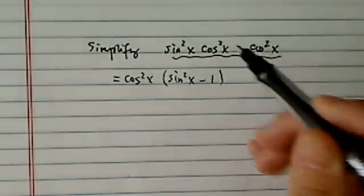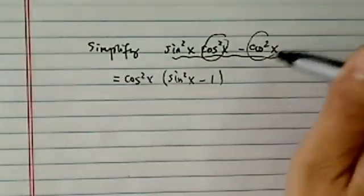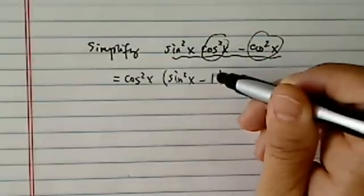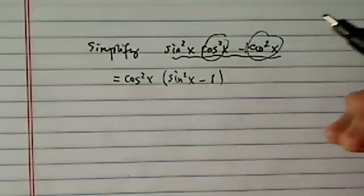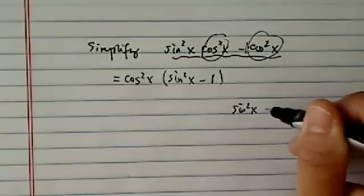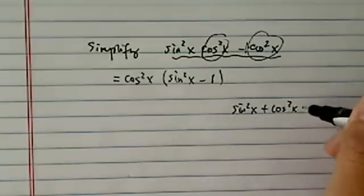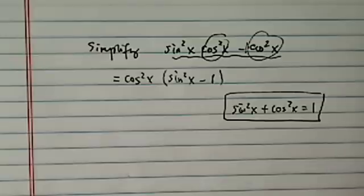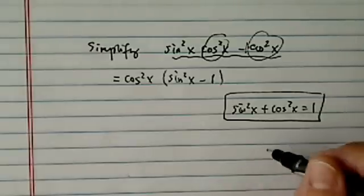What I did over here is I factored out the common term. Since this one has a sine x squared, this one is 1, because it's really 1 times this. From here, one of the most important things you need to commit to memory is this: sine x squared plus cosine x squared equal to 1.